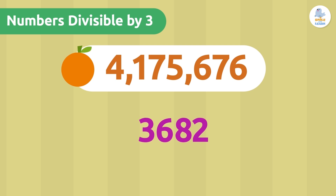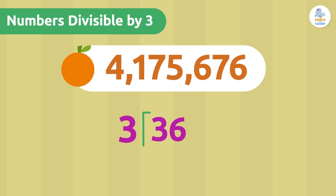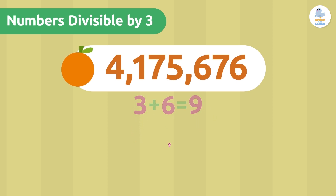Doing division with a large number would take us a long time, and what we want to know quickly is the divisibility of a number. In that case, after adding up the digits of the original number, we go back and add again the digits of that result to get a smaller number. If we get a number divisible by 3, then the original number is also divisible by 3.